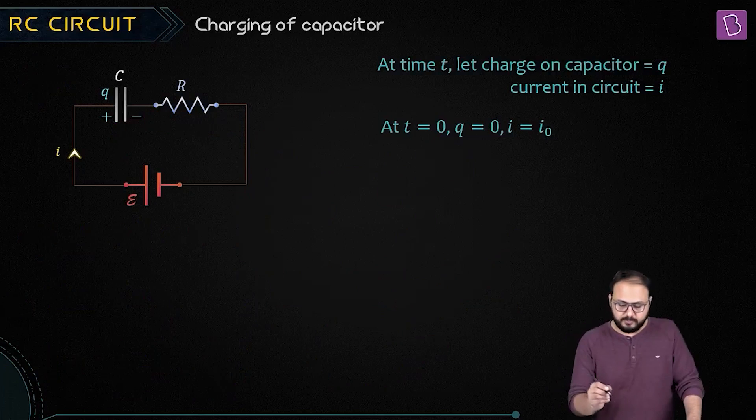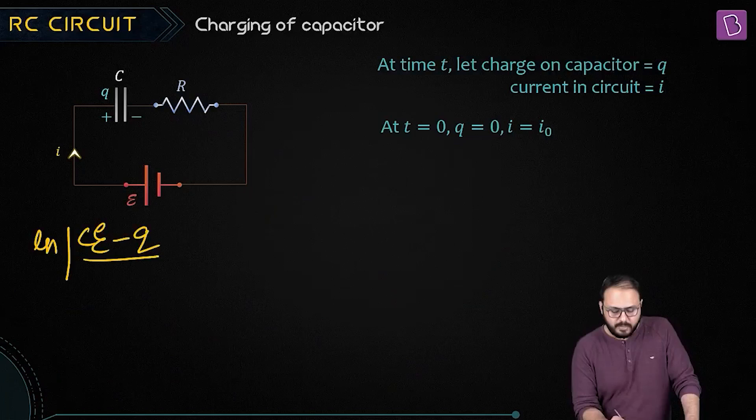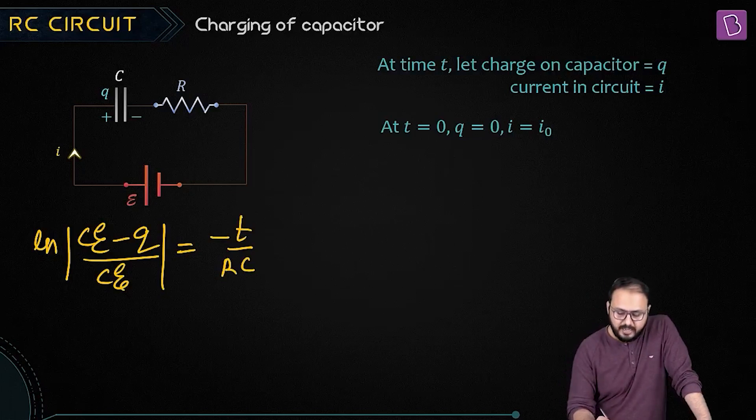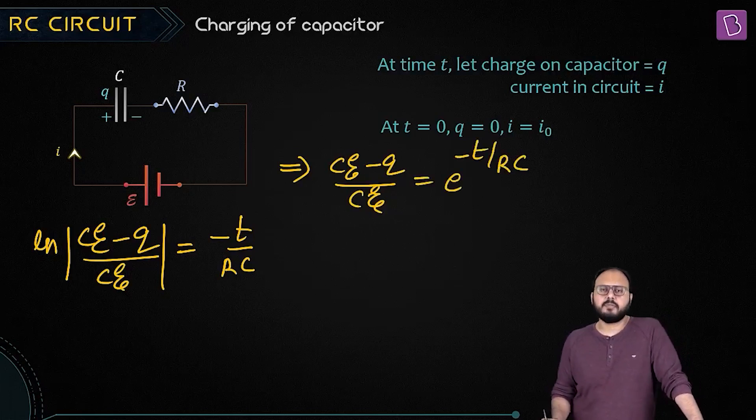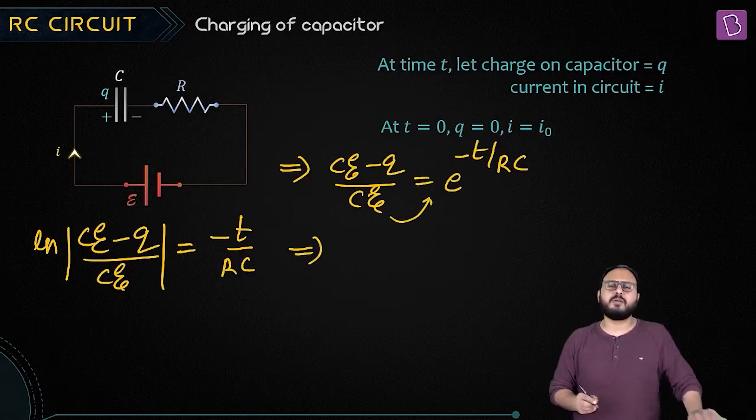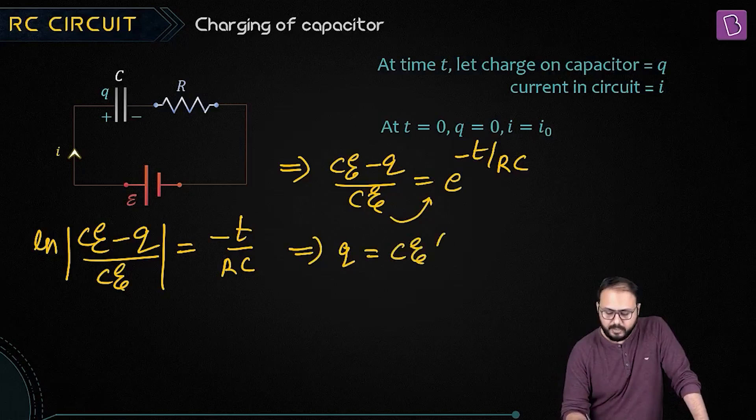Upper limit minus lower limit—just a request: don't absorb the minus sign, take the minus sign to that side. If you do that, you get: ln(ce minus q) from q to zero equals minus t by rc. That implies (ce minus q) / (ce) equals exponential minus t by rc. That implies, if I cross multiply c and take this side, q is ce times (1 minus exponential minus t by rc).